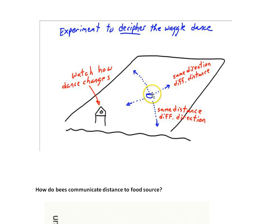And so you let some workers go out to the food and let those bees go back and presumably communicate. And then, of course, other bees will relocate the food.